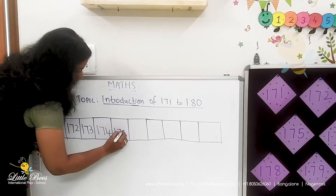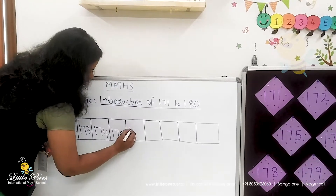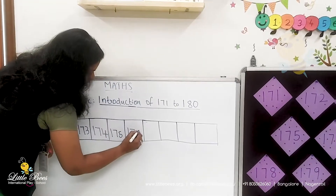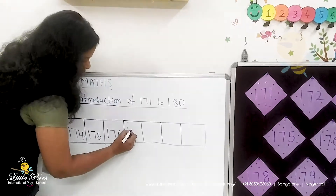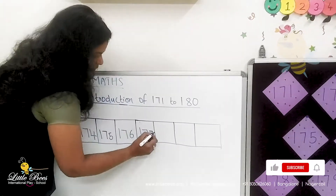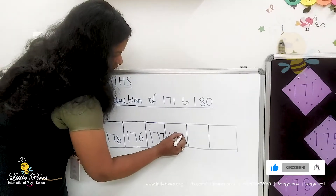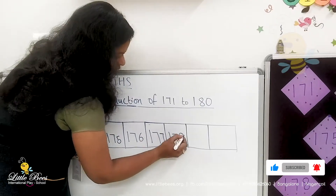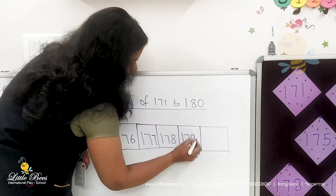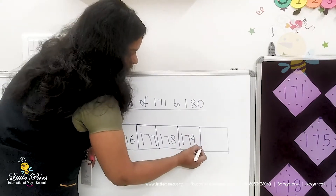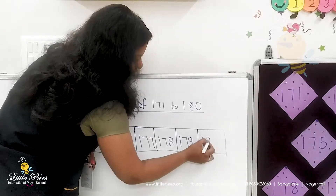174, 175, 176, 177, 178, 179. Which is the last number? 180.